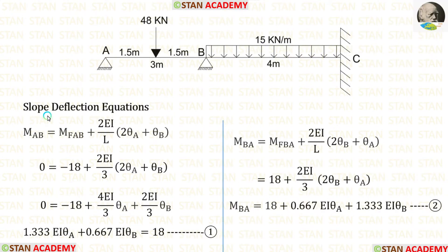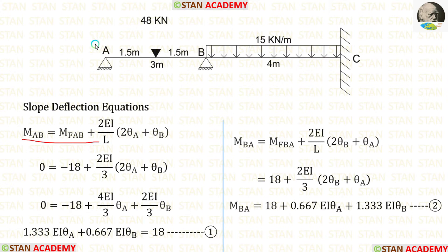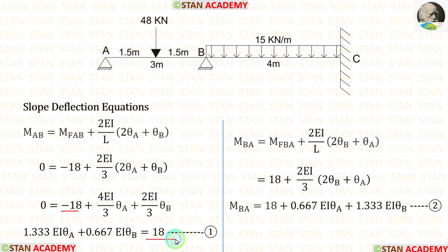Now let us make the slope deflection equations. First, let us take span AB. After applying the fixed end moments with a length of AB equal to 3 meters, and using the first equilibrium equation where MAB is equal to 0, we substitute 0 for MAB and bring −18 to the left side, where it becomes positive. This gives us our first equilibrium equation.